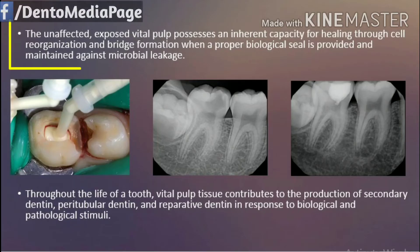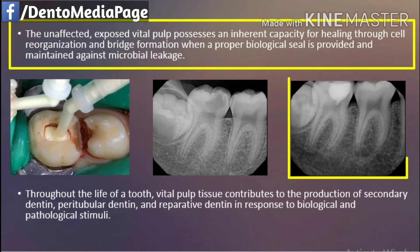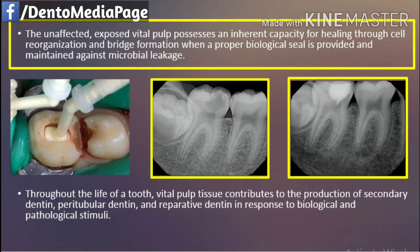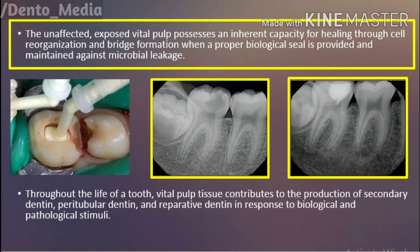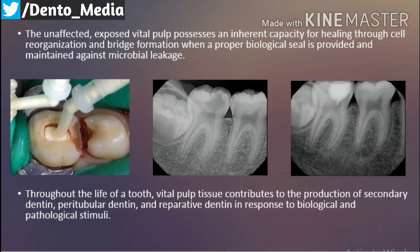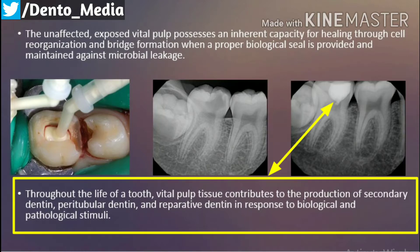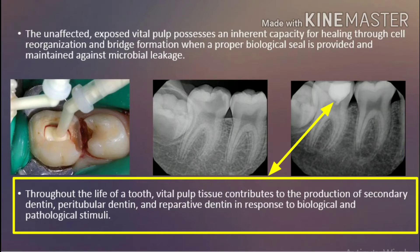The unaffected exposed vital pulp possesses an inherent capacity for healing through cell reorganization and bridge formation when a proper biological seal is provided and maintained against microbial leakage. Throughout the life of a tooth, vital pulp tissue contributes to the production of secondary dentin, peritubular dentin, and reparative dentin in response to biological and pathological stimuli.